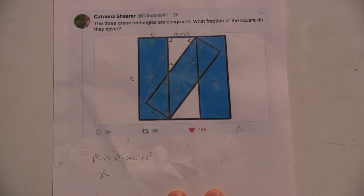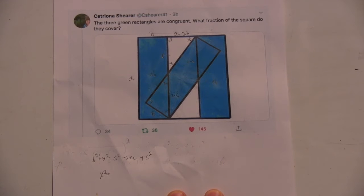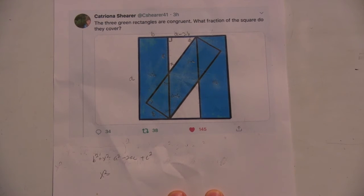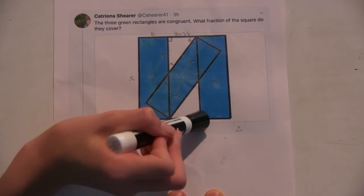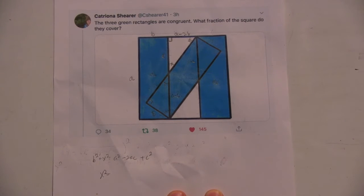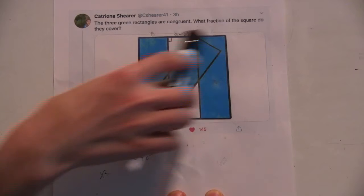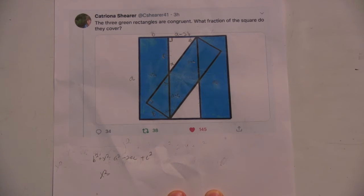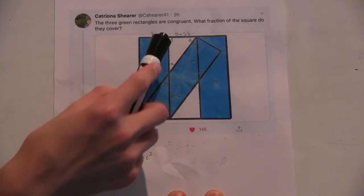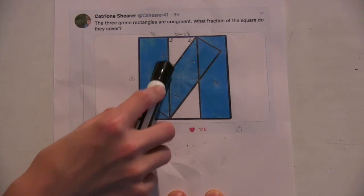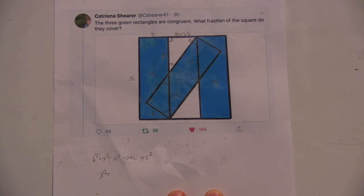And what I wanted to try to do was prove that this middle rectangle, or find out if it was congruent to the other rectangles. Because that would make this side, the whole side length, 3B. So, the total area would be 3AB. That meant I could maybe find this length here, in terms of A or B.